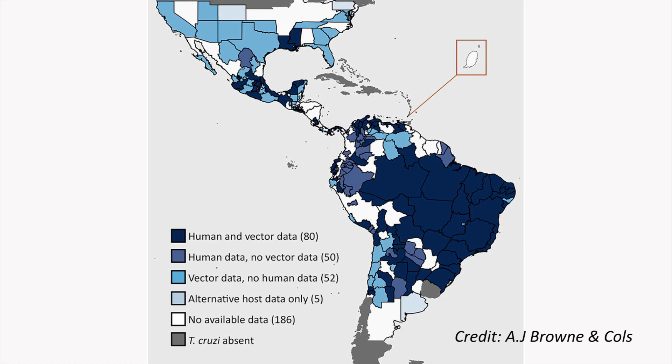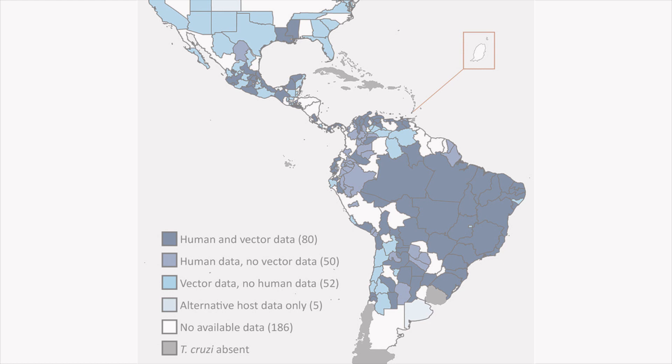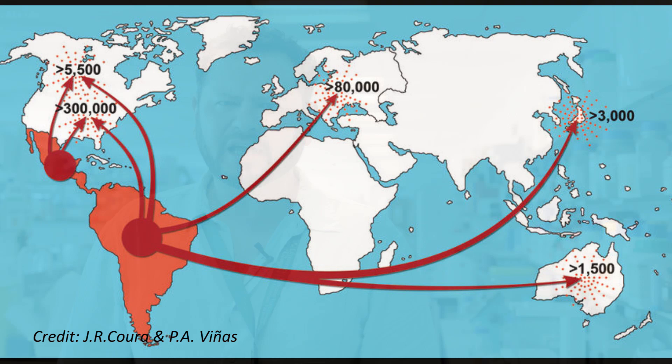However, global population movement is changing the disease's distribution, with recent cases in Europe, Australia and Japan, where it can be spread by blood transfusions, organ transplants, or passed from mother to child.